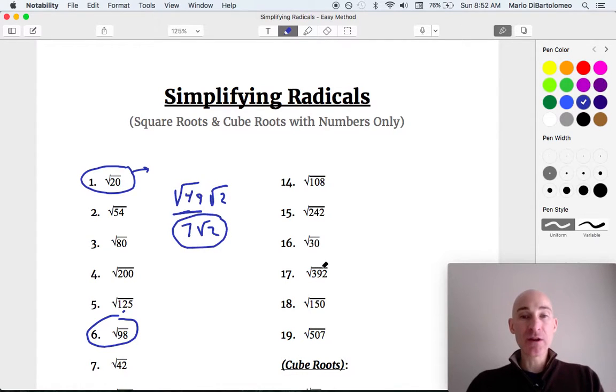But when the numbers get a little bit larger, like let's say, for example, number 17, the square root of 392, right? Well, 392, let's do the prime factorization method for this one. So 392, we know it's even. We can divide it by 2. So that's going to be 196 times 2. If you can't do that in your head, just use a calculator. This is going to be 2 times 98. This is going to be 2 times 49, and 49 is 7 times 7.